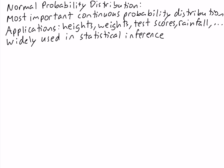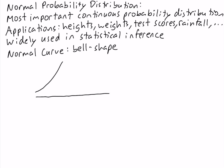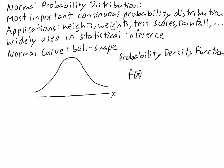The graph of the normal probability distribution is called the normal curve and it has a bell shape. The formula for this graph is given by the probability density function: f(x) = (1 / (σ√(2π))) × e^(−(x − μ)² / (2σ²)).